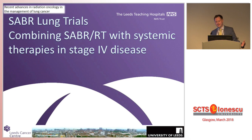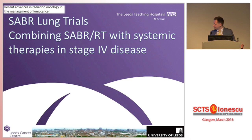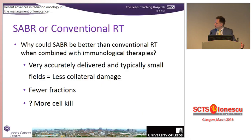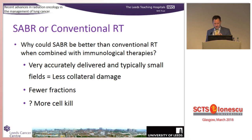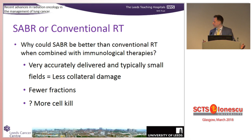Moving away from oligometastasis, could radiotherapy have a role in stage 4 disease not amenable to local therapy? You could do this with either stereotactic or conventional radiotherapy. Why might stereotactic radiotherapy be better? It's very accurately delivered with very small fields, so you get less collateral damage and less chance of toxicity with systemic agents. You get fewer fractions, so it's more convenient for the patient. And you get more cell kill with a bigger dose - more cell kill means more tumour antigens, potentially more benefit with systemic agents.